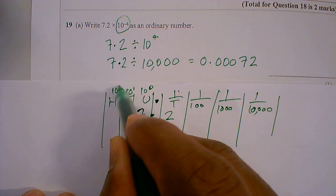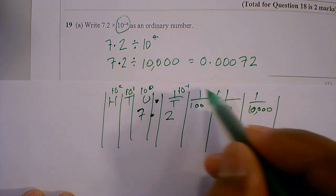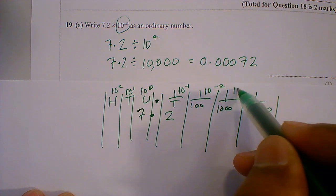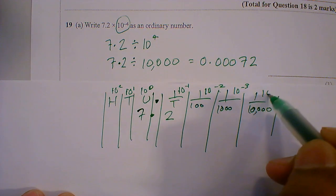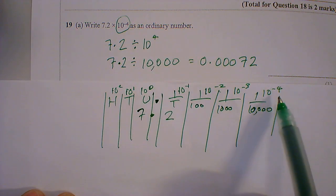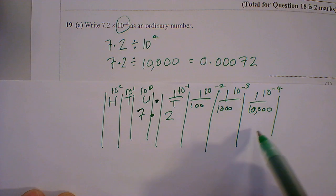A tenth is ten to the power minus 1. A hundredth is ten to the power minus 2. Ten to the power minus 3. Ten to the power minus 4. So the place value here is ten to the power minus 4. So we put our 7 here.